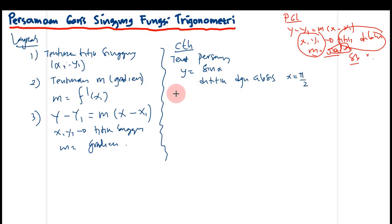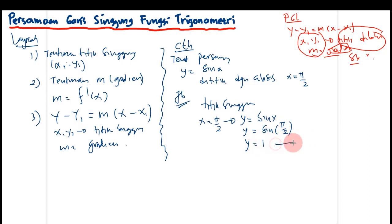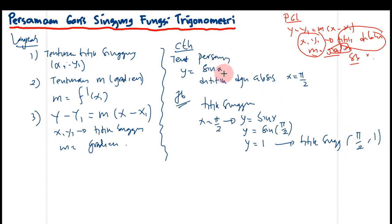Langkah pertamanya, kita tentukan titik singgungnya. Jawab: titik singgung — X sama dengan pi per dua, kita substitusi ke Y sama dengan sinus X. Maka Y sama dengan sinus dari pi per dua. Sinus 90 derajat sama dengan 1. Maka titik singgungnya adalah (π/2, 1). Inilah yang kita gunakan sebagai X1 dan Y1.